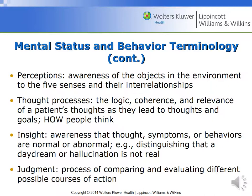Perceptions refer to the patient's awareness of objects in the environment according to the five senses and their interrelationships. A normal perception, for example, is smelling warm chocolate chip cookies and relating that to baking in an environment where those cookies are being made — that would be an appropriate perception. Thought processes refer to the logic, coherence, and relevance of a patient's thoughts and how those lead to goals — basically, how people think.